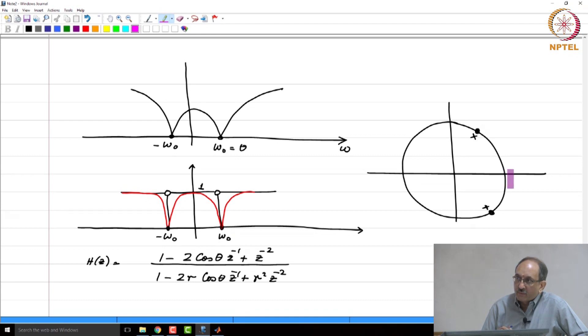And geometrically also, this makes sense because if you are say at this point on the unit circle, then the distance between both pole and 0 is roughly the same. So, when you are reasonably far away from this point, wherever you are on the unit circle to a good approximation, the distance to both poles and 0s is roughly the same and hence, the ratio will be 1. Therefore, the magnitude response quickly rises to 1 and as you approach, it gets pulled down because of the 0.